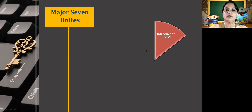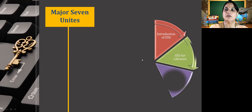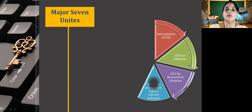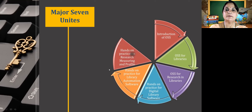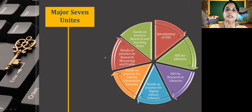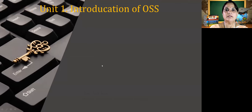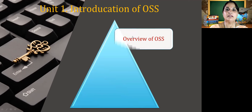Let us see the major 7 units. The first unit will be on introduction to open source software. The second unit will be on open source software for libraries. The third unit will be on open source software for research in libraries. The fourth unit will be on hands-on experience for digital library software. The fifth on hands-on experience for library automation software. The sixth on hands-on experience on research measuring and profiling tools. And the last unit will be on hands-on practice for research and teaching tools. The first 3 units cover theoretical aspects and the remaining 4 units cover hands-on practice.